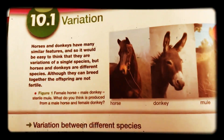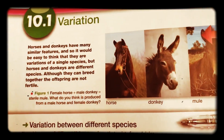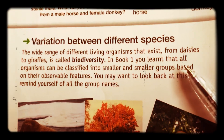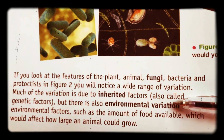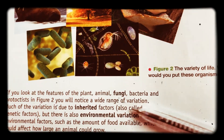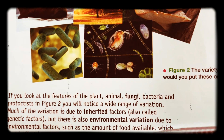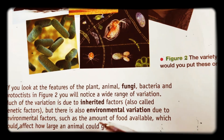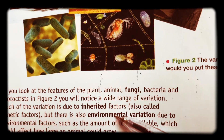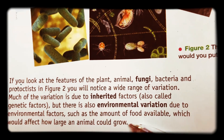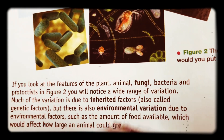So here's a whistle stop tour. We started off in this chapter with variation, thinking about biodiversity. Biodiversity is the wide range of different living organisms that exist, from daisies to giraffes. We were looking at features of living organisms and there's quite a bit of variation — differences between these organisms. Much of this is due to inherited or genetic factors which come from parents, but it's also environmental variation due to environmental factors such as the amount of food available, which would affect how large animals would grow.